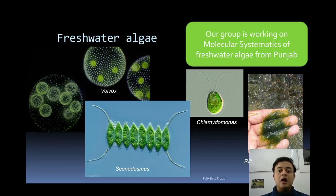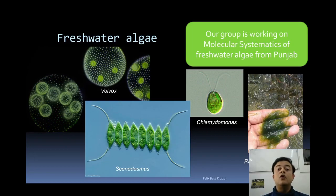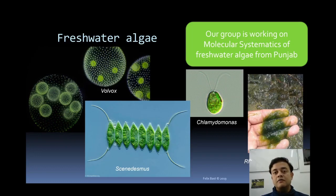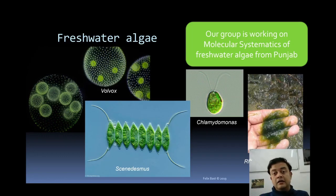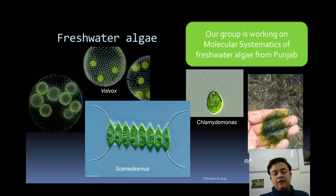Algae are not only marine — there are also terrestrial and freshwater algae. Trentepohlia, which I mentioned in the blood rain discussion, is a terrestrial alga. Trebouxia is also a terrestrial alga, often found as the phycobiont in lichens — symbiotic systems of algae plus fungi. In terms of habitat, we have terrestrial algae, freshwater (limnetic) algae, and marine and estuarine algae.